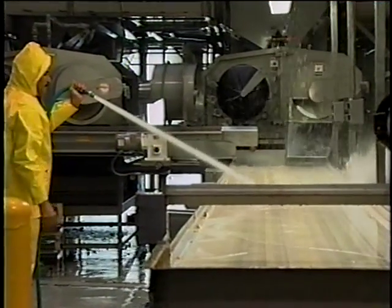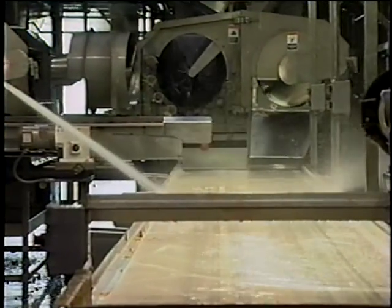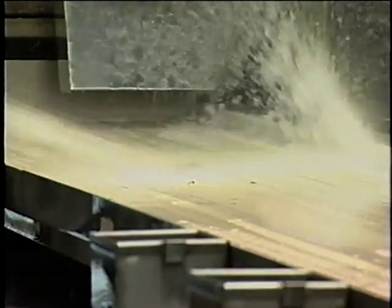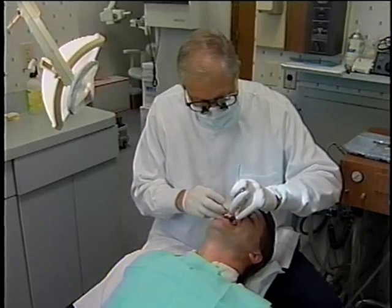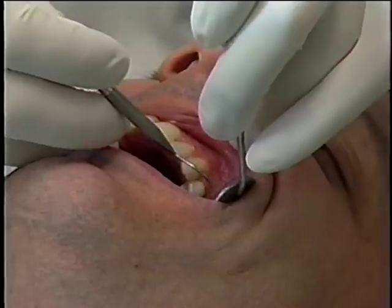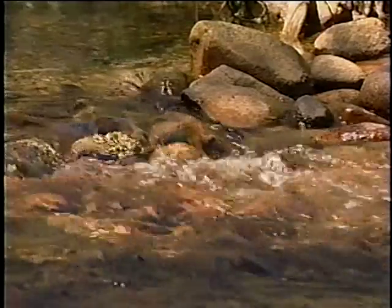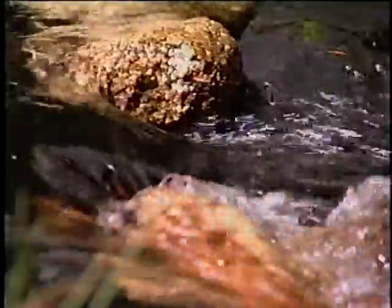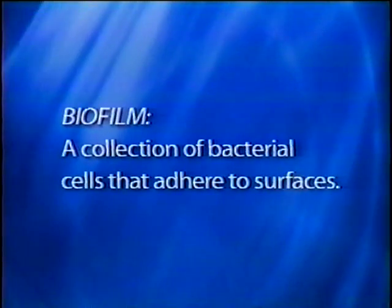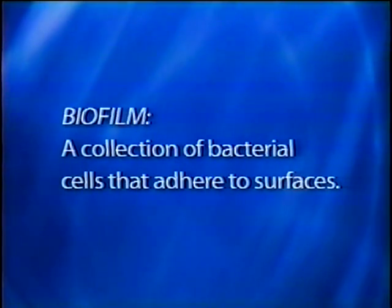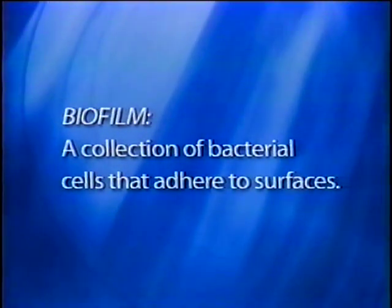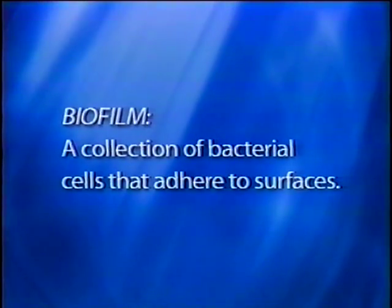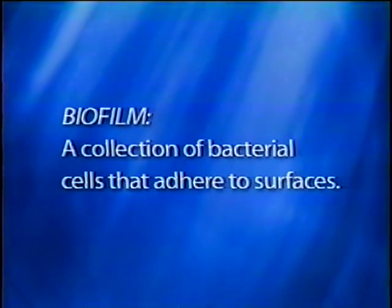What is the importance of acceptable equipment construction and proper cleaning and sanitizing activities? The answer can be summed up in one word: biofilm. Have you heard your dentist talk about removing plaque from your teeth? Have you ever walked across a stream and slipped on slimy rocks? These are both examples of common biofilms. Biofilm can be defined as a collection of bacterial cells that adhere to surfaces, including food processing equipment, walls, and floors. These bacteria surround themselves with a protective envelope of sugar polymers.